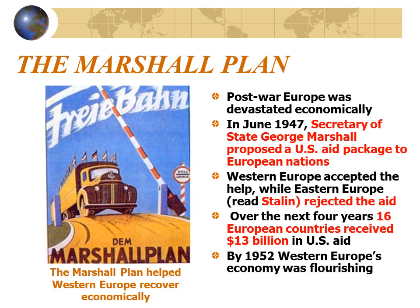The Marshall Plan dealt with post-war Europe, which was devastated economically after the war. In June of 1947, Secretary of State George Marshall proposed an aid package to European nations. Western Europe accepted the help, while Eastern Europe — those countries controlled by Stalin — rejected the aid. Over the next four years, 16 European countries received $13 billion in U.S. aid, and by 1952, Western Europe's economy was flourishing.